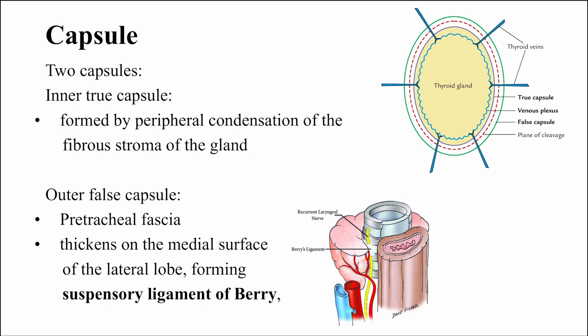On the medial surface of the thyroid gland, the pre-tracheal fascia holds the thyroid gland to the cricoid cartilage strongly — this is known as the ligament of Berry. Because of all this holding, the thyroid gland is strongly attached to its position. While swallowing, there is movement of the laryngeal cartilages and the hyoid bone, and along with this movement, the thyroid gland — being attached to the laryngeal cartilage — also moves during deglutition.